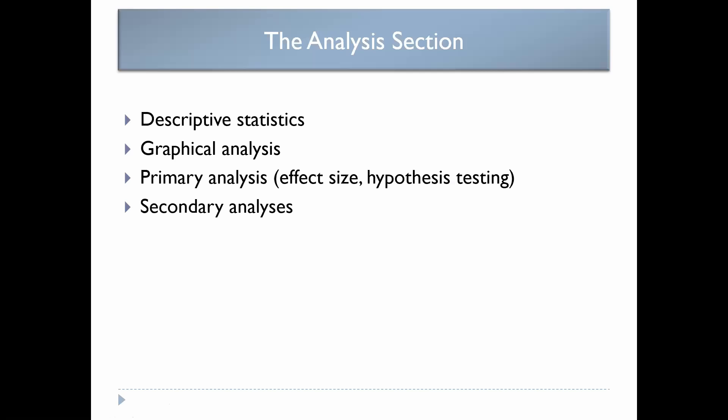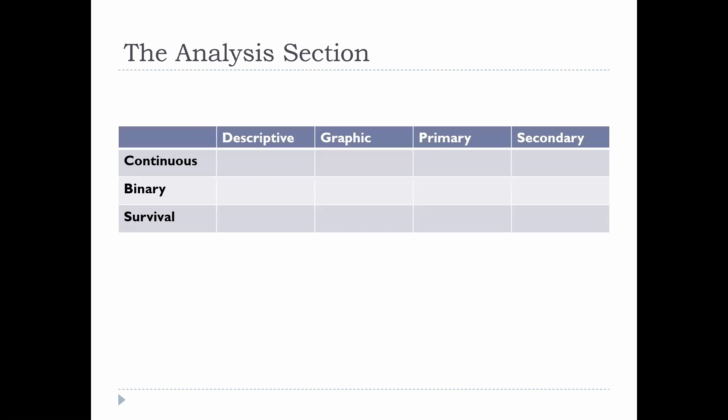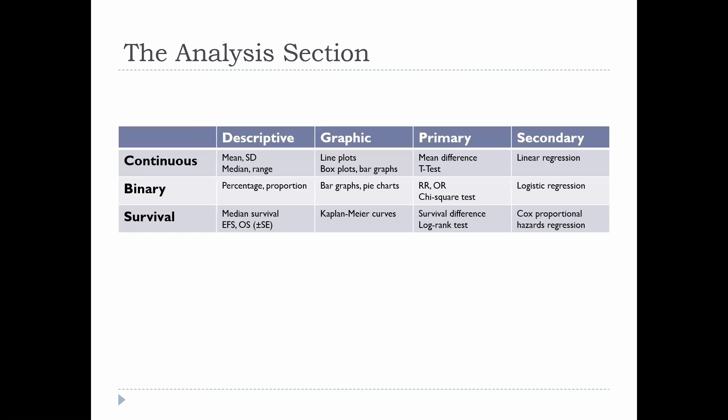So every analysis section should have: a first paragraph on your descriptive statistics, a next paragraph on your graphical analysis, a third paragraph on your primary analysis covering effect size and hypothesis testing — relative risk, p-values, confidence intervals — and then your secondary analysis, which is mainly your adjusted analysis, most commonly regression to account for confounders. You could also do sensitivity analyses, subgroup analyses, and you should add a sample size estimation.